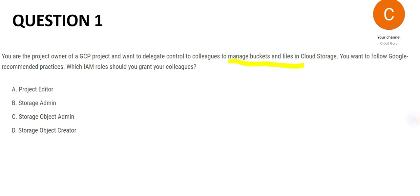Now C — storage object admin. The question is not asking anything related to objects. It wants to grant colleagues access to manage buckets and files in Cloud Storage — nothing object-related. That's why C is not the answer, and with that logic you can also eliminate D. So A, C, and D have been eliminated, and B — storage admin — is the answer. One important point: the reason we choose B storage admin over C storage object admin is that the question does not ask anything related to objects. It wants us to manage buckets and files. That is why storage admin is the answer. For question 1, our answer is B — storage admin.